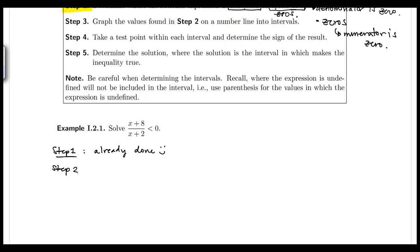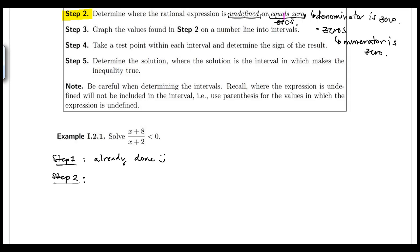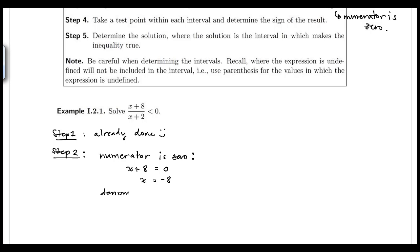Step two is to determine where our inequality is undefined and equals zero, meaning we find when the denominator is zero and when the numerator is zero. The numerator is zero when x + 8 = 0, which gives x = −8. The denominator is zero when x + 2 = 0, which gives x = −2. So x = −8 is where the expression equals zero, and x = −2 is where it is undefined.